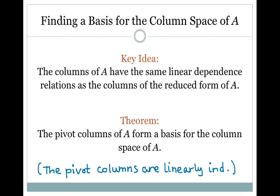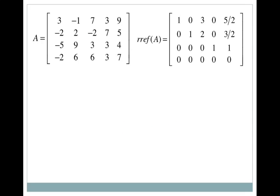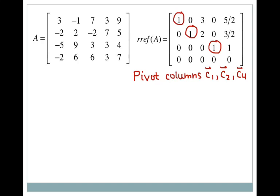Let's find a basis for the column space of A given this matrix A, which is a 4 by 5 matrix — so I have 5 columns. Using that theorem, I row reduce the matrix to find the reduced row echelon form of A and look for my pivots. I have a pivot in column 1, column 2, and column 4. So columns 1, 2, and 4 form a basis for the column space of A.